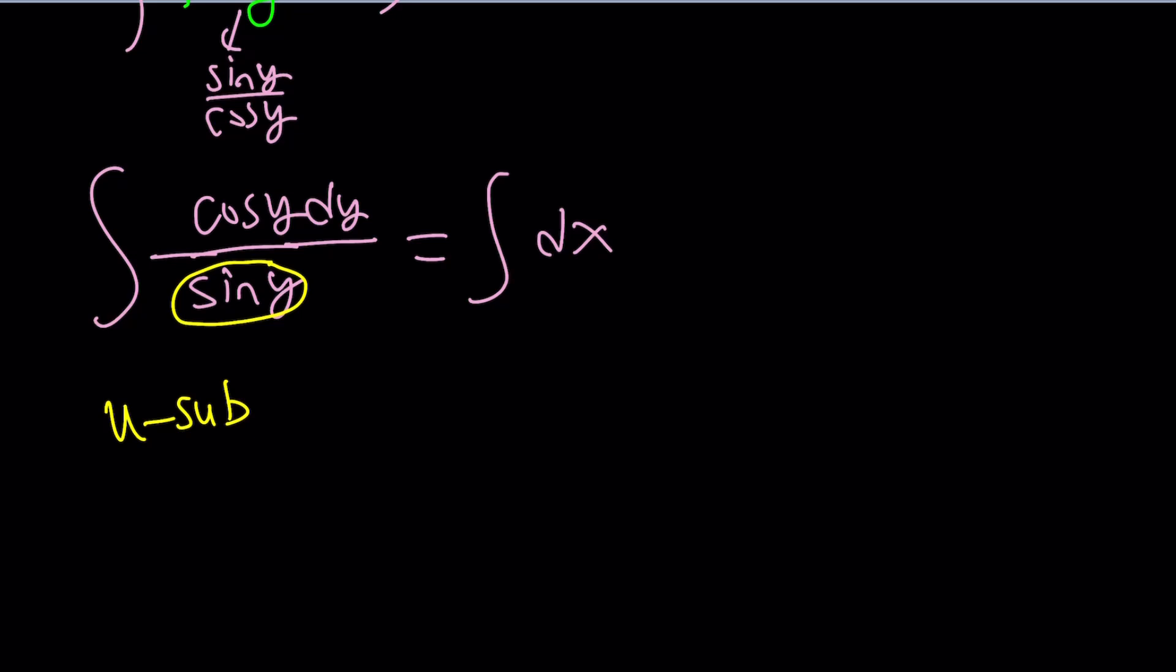You might be saying, if I pick cosine as my u, the derivative of cosine is negative sine, so couldn't you adjust with the minus sine? No, because not only do you have to get the derivative, you have to get the du. So we have to have a u and a du together. Make sense? Nice. So sine y equals u.